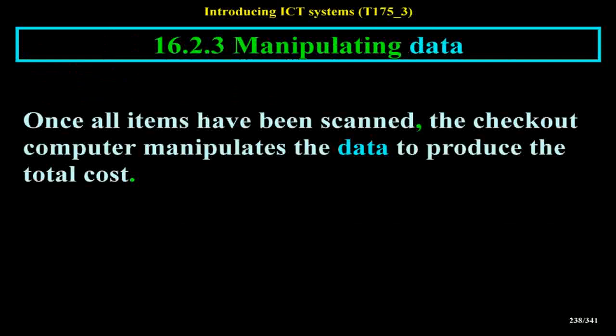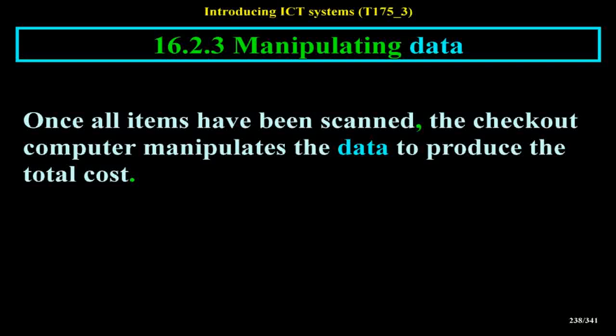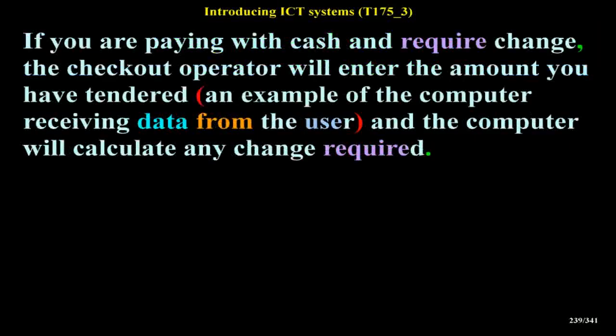Manipulating Data: Once all items have been scanned, the checkout computer manipulates the data to produce the total cost. If you are paying with cash and require change, the checkout operator will enter the amount tendered, and the computer will calculate any change required.